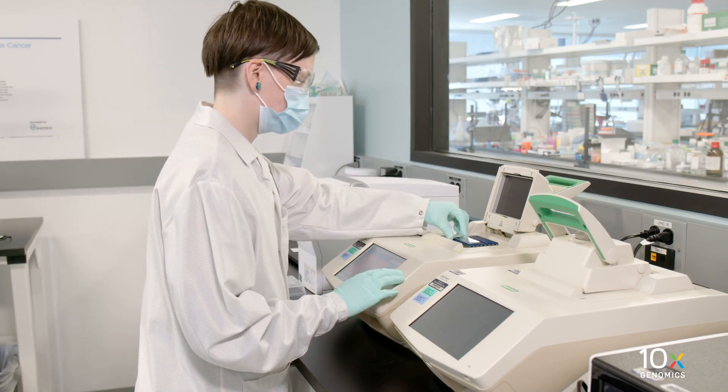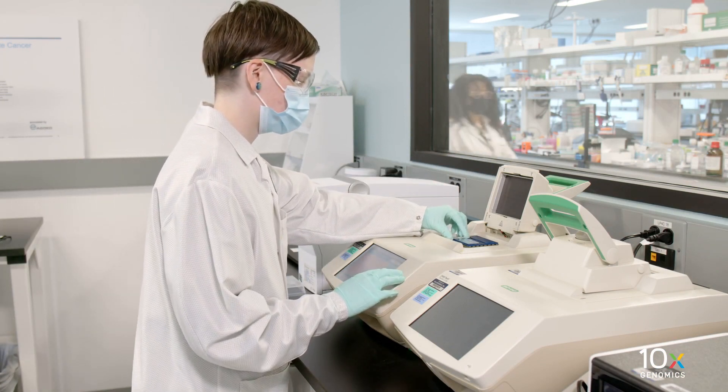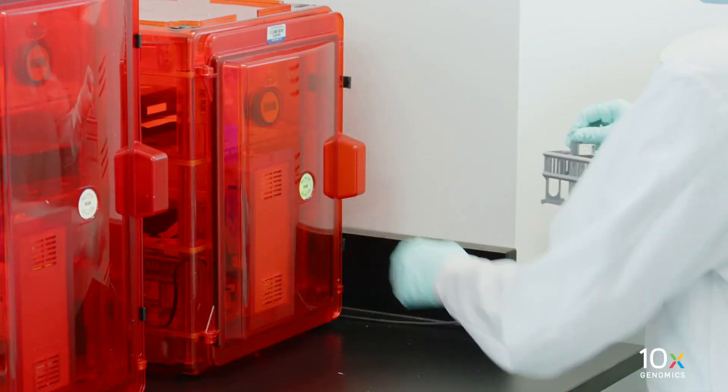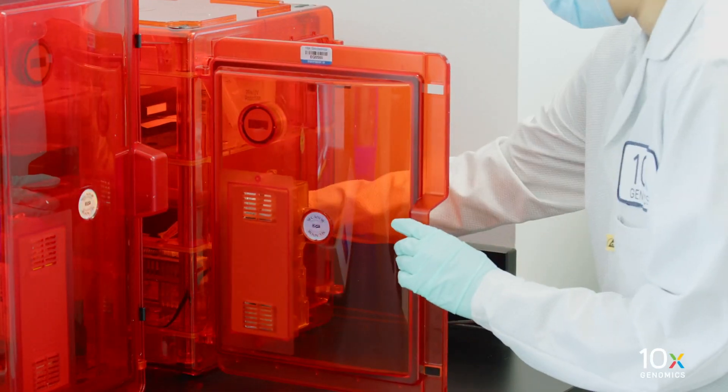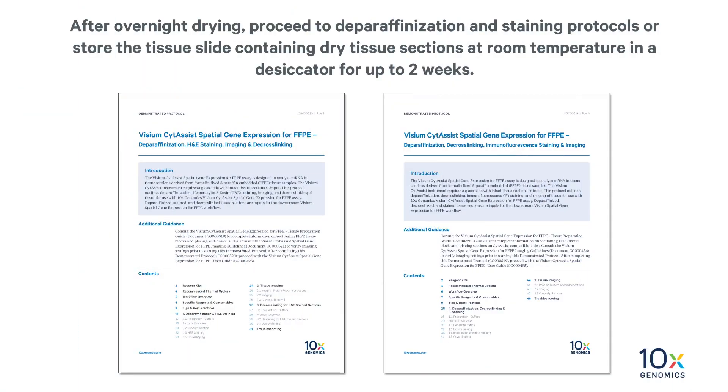Alternatively, a thermal cycler set at 42 degrees Celsius can be used for drying. Place in a desiccator and keep overnight at room temperature to ensure proper drying.